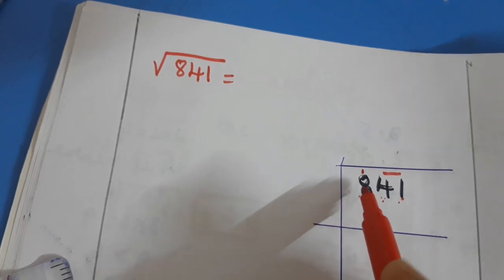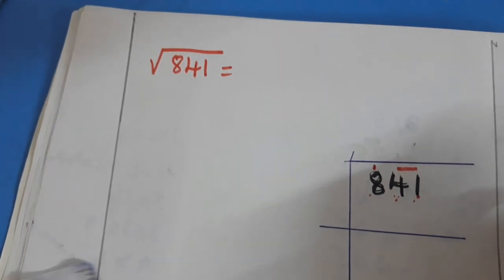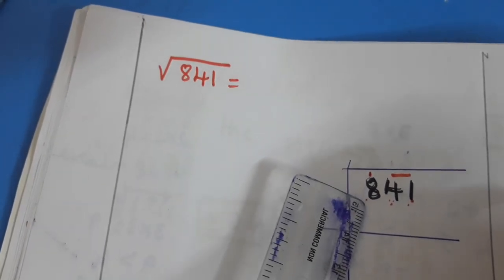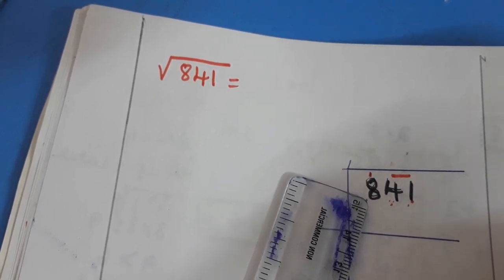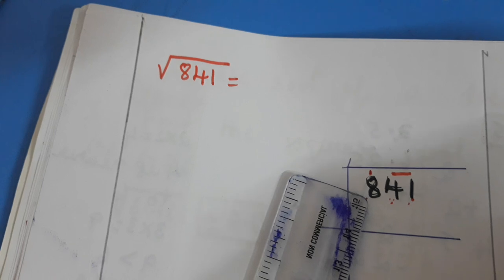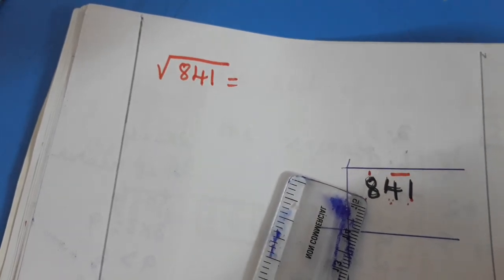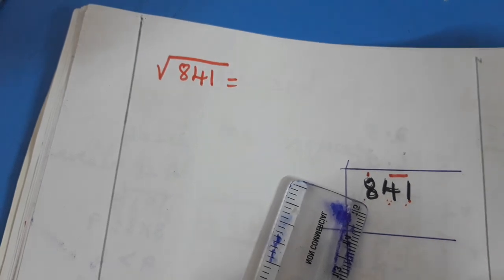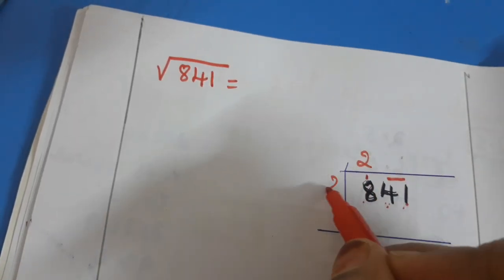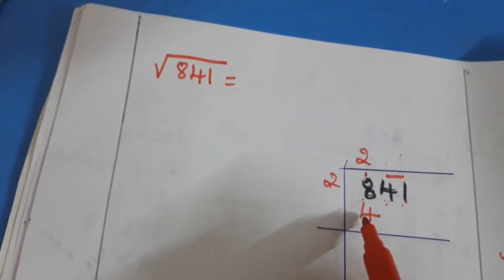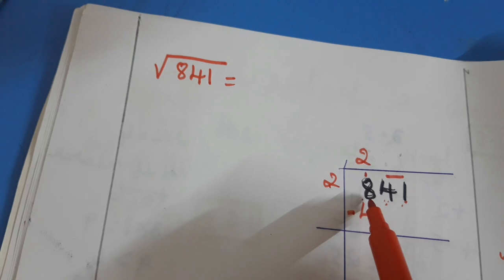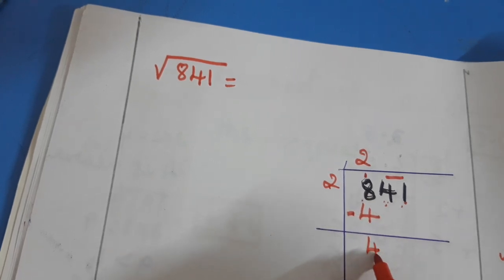Square numbers nearer to 8: two twos are four, three threes are nine. Nine is greater than eight, so we cannot take three. We take two, since two times two is four. We write four here. Then eight minus four is four, and we bring 41 down so it becomes 441.